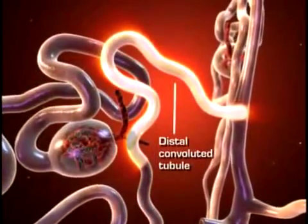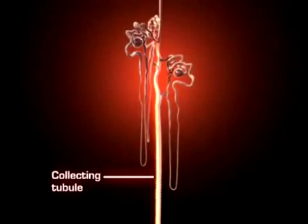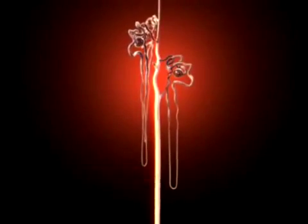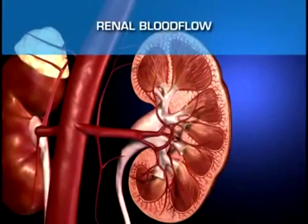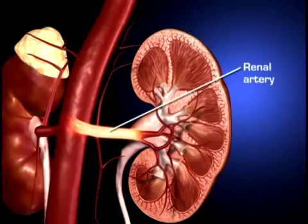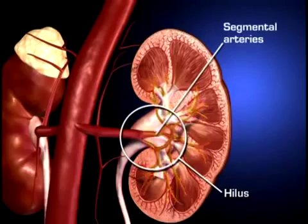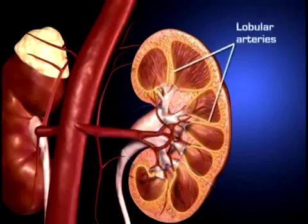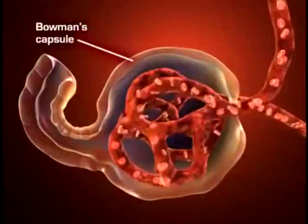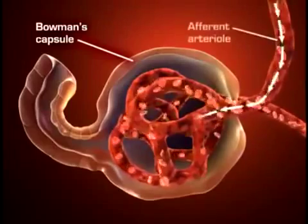The glomerulus is a unique high-pressure mass of capillaries that filters the blood. The glomerulus is encased in a thin, double-walled capsule called Bowman's capsule. The space inside the capsule and surrounding the glomerulus is called Bowman's space. Plasma-like fluid is filtered from the capillary blood into Bowman's space through the glomerular filtration membrane.